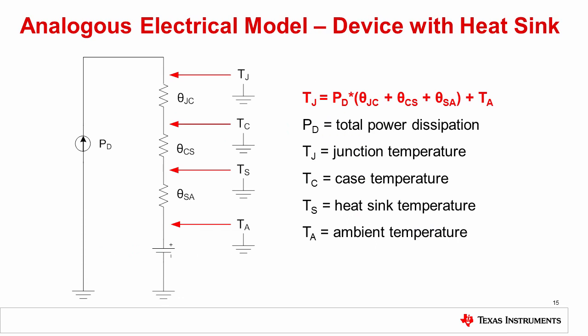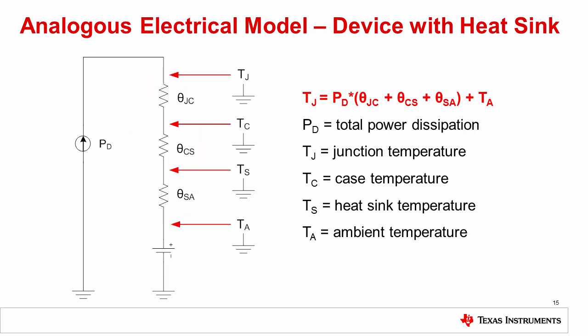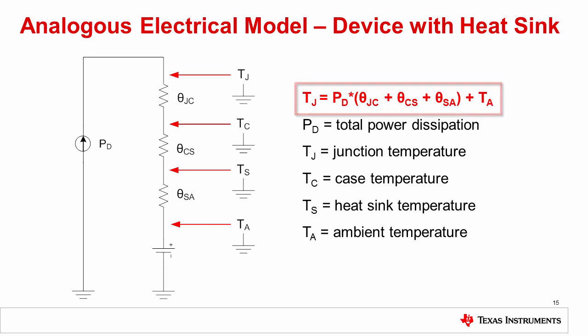As before, we can create an electrical model for this new case with an electronic device connected to a heat sink. Note that this time, three thermal resistances are included in the model. We are still primarily interested in determining the junction temperature, TJ. Similar to before, this is calculated with the equation TJ equals PD times theta JC plus theta CS plus theta SA plus TA.